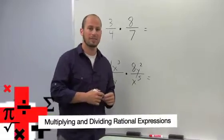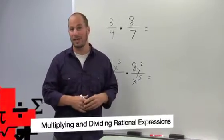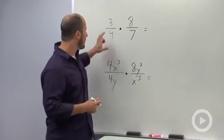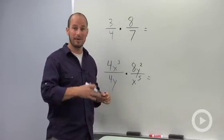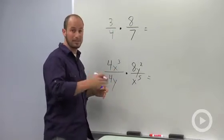Multiplying and dividing rational expressions is very similar to multiplying and dividing fractions. So if we have 3/4 times 8/7, you already know that we can cancel like terms if we have them.